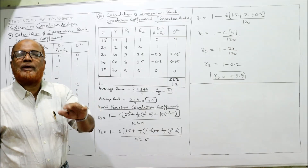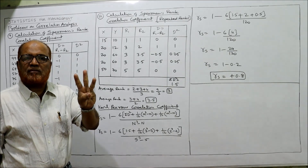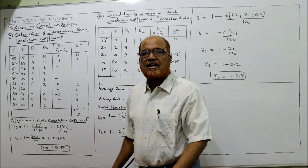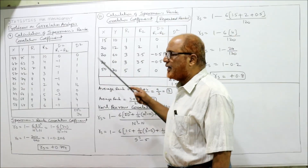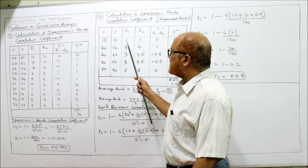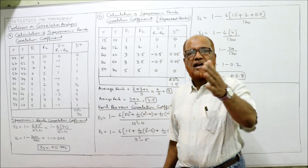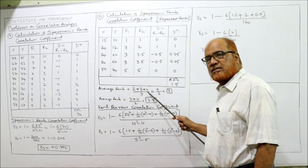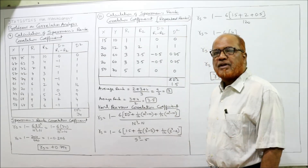Higher than 15 is 20, but 20 occurs 3 times. So we take the average of the next 3 ranks. After first rank, the next three positions are second, third, and fourth. Average = (2 + 3 + 4) / 3 = 9 / 3 = 3. So each of the three 20s gets rank 3.